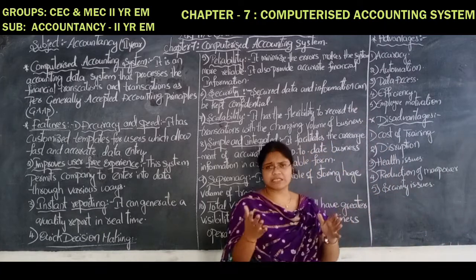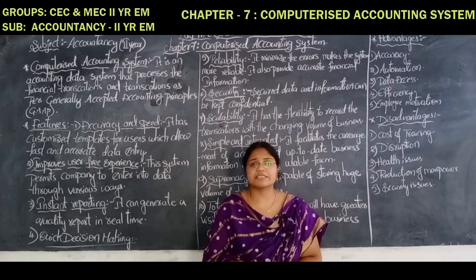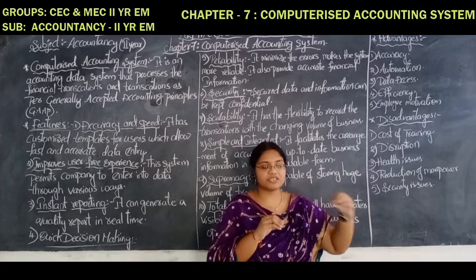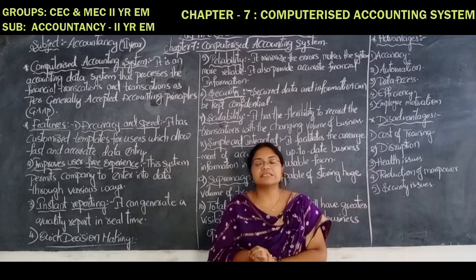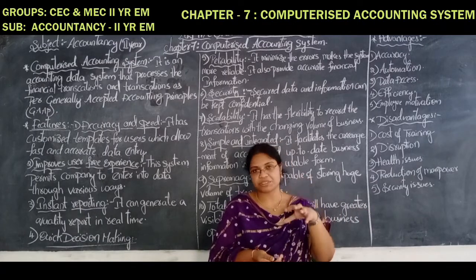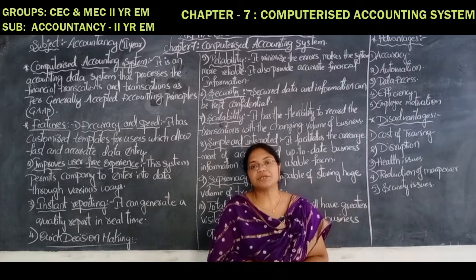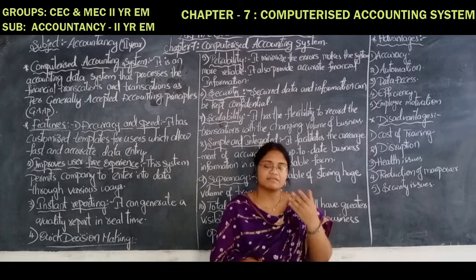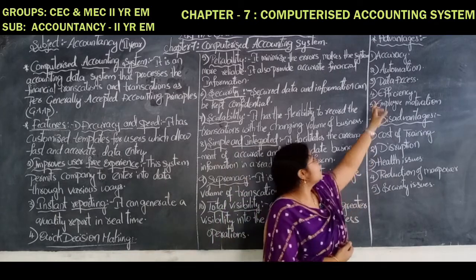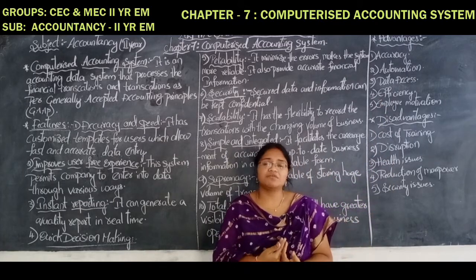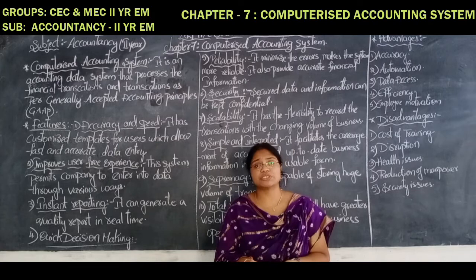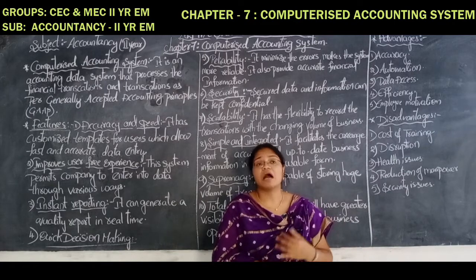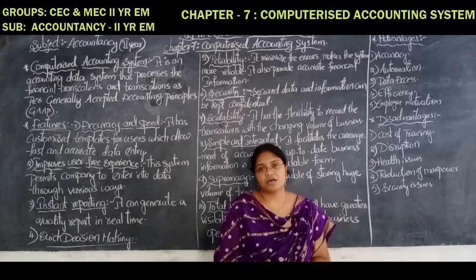Now the advantages of computerized accounting system, which are somewhat similar to the features. First is accuracy — there is no error in the transaction, those are completely correct. Automation: if we prepare just the ledger, the remaining accounts are done by the computer software only. Whatever software we are installing in that computer system, that software does the remaining accounts. We have to do just the primary duty; the secondary duty is done by the system itself. Data access: whatever data it gives, we can access that data, store it, take necessary steps, take decisions regarding our business, and also improve the operations of the business.